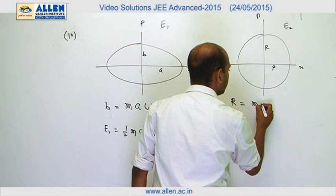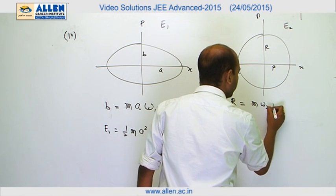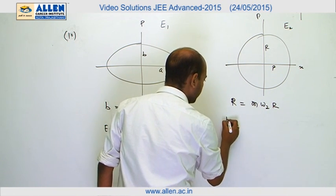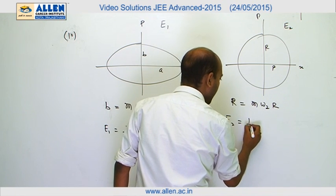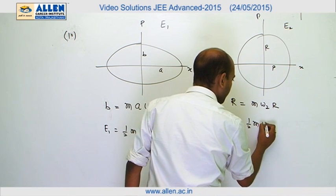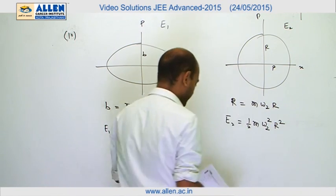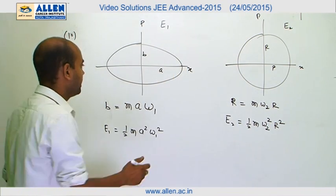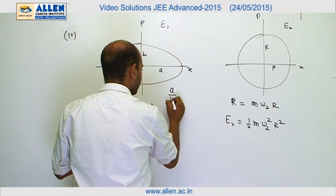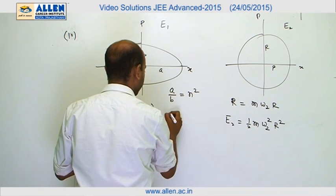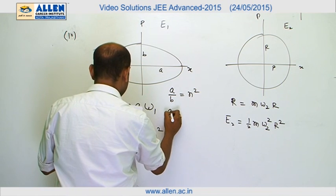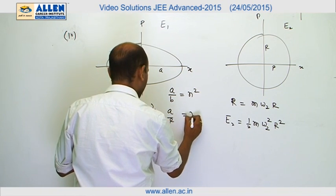And its energy E2 equals half M omega 2 squared R squared. They have given a relation A by B equals N squared and A by R equals N.